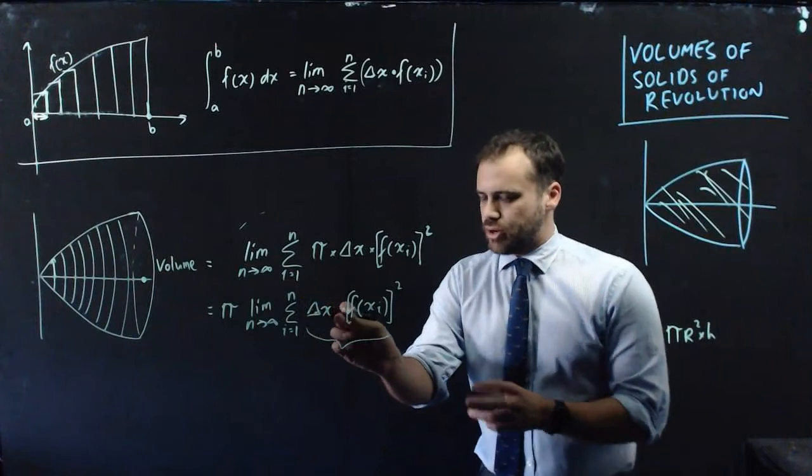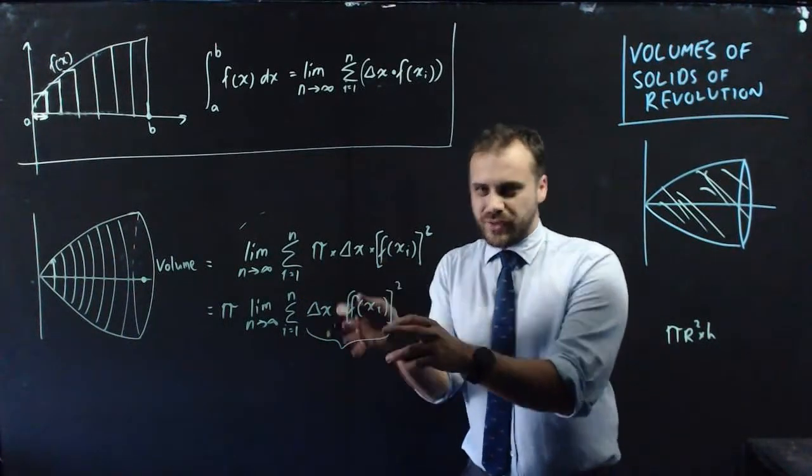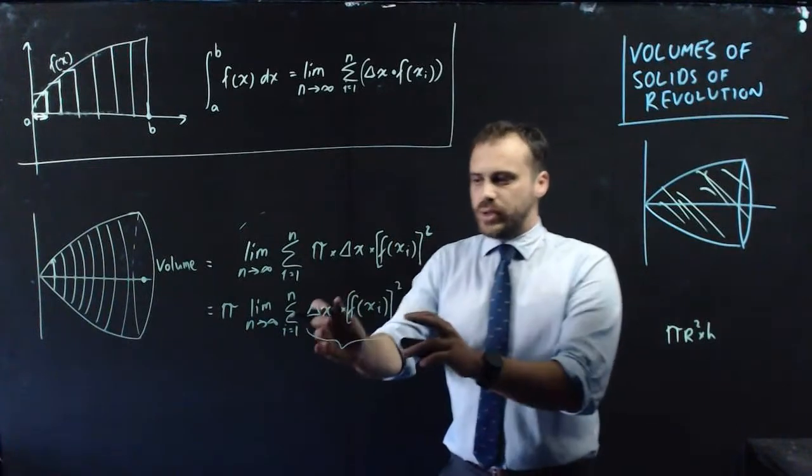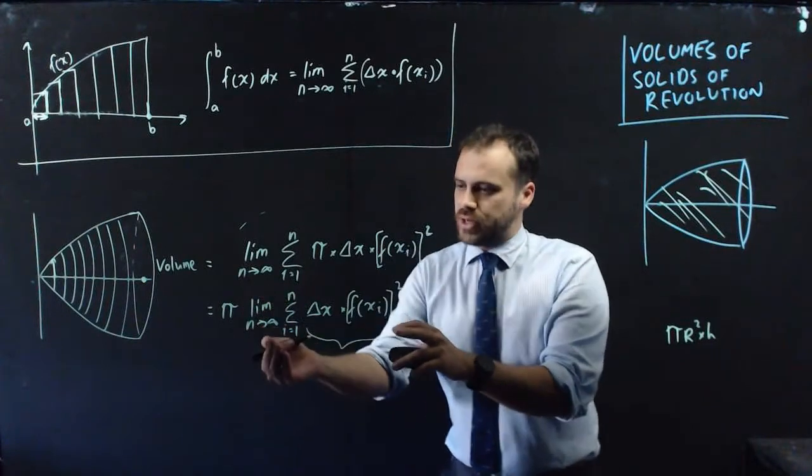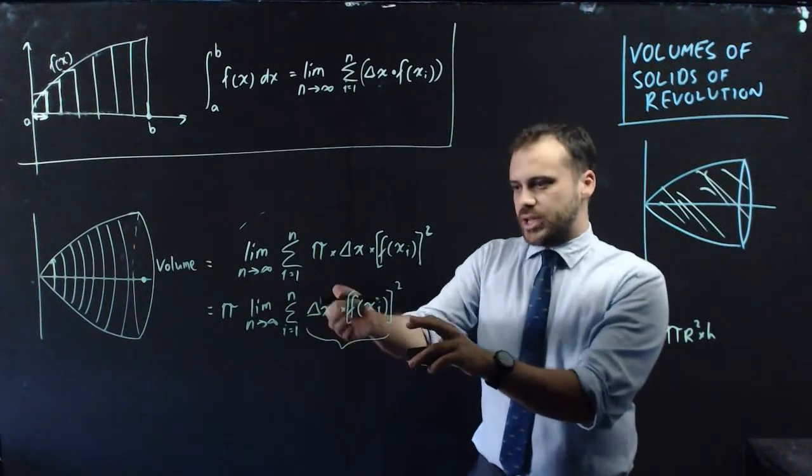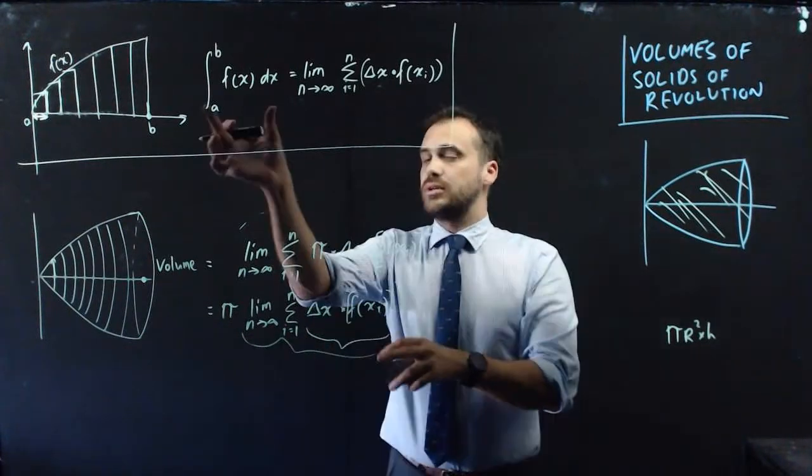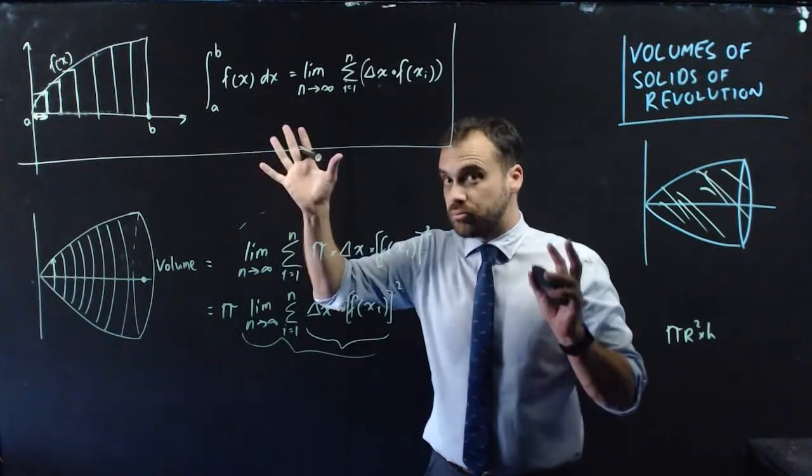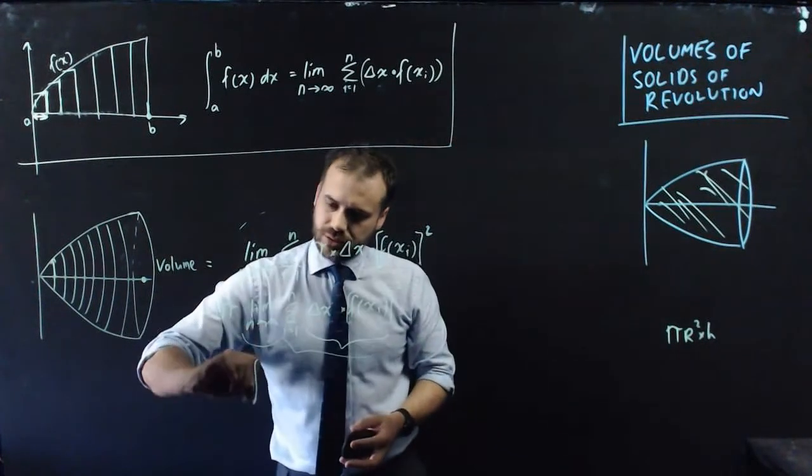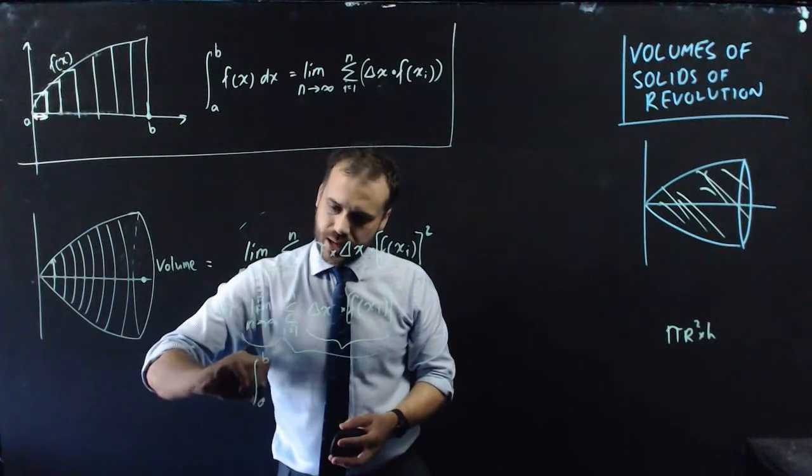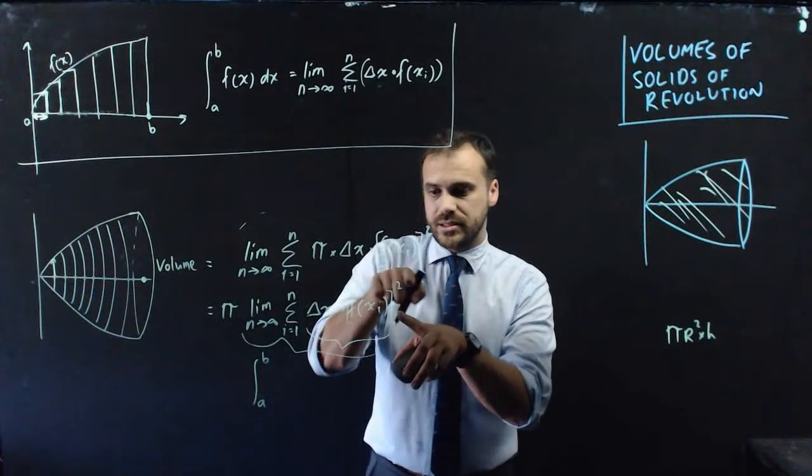Look at this thing here. This is the change in x times a function. Now it's a function squared, but a function squared is still a function. And we know from up here that if we're taking a limit as n approaches infinity, the sum of the change in x times some function, that is equal to an integral. So I can simply replace this with the integral between b and a of f of x squared.